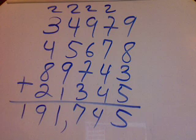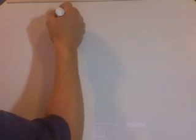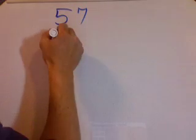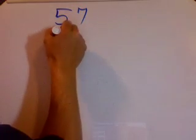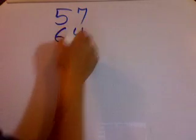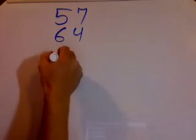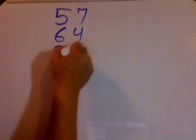The answer is 191,745. Sometimes you may have a lot of numbers — for example, 57 plus 64 plus 39 plus 52 — and you want to add all these numbers.